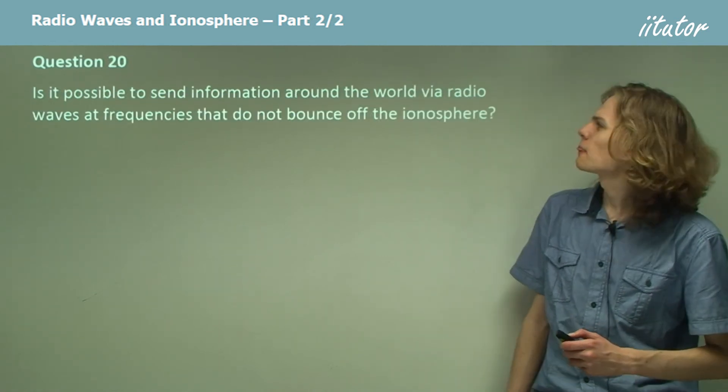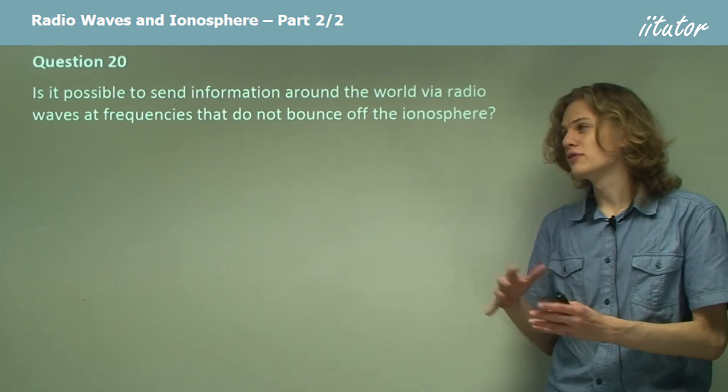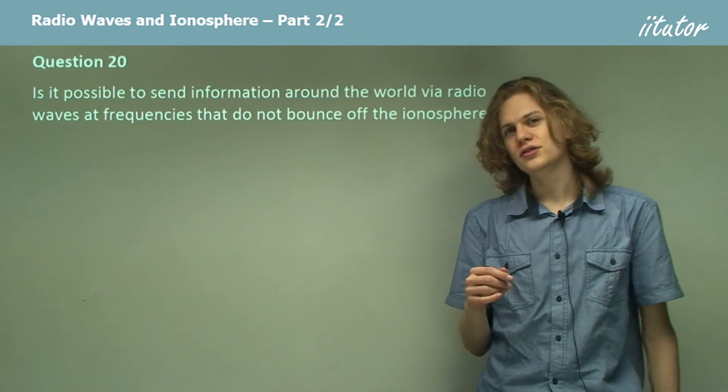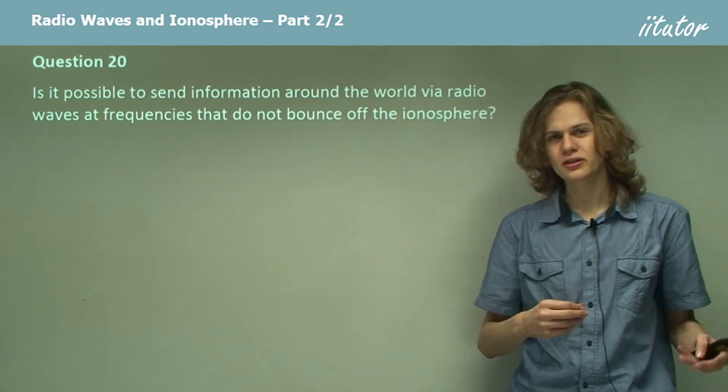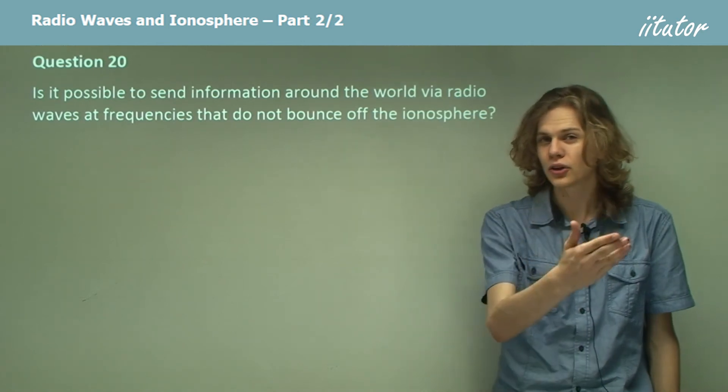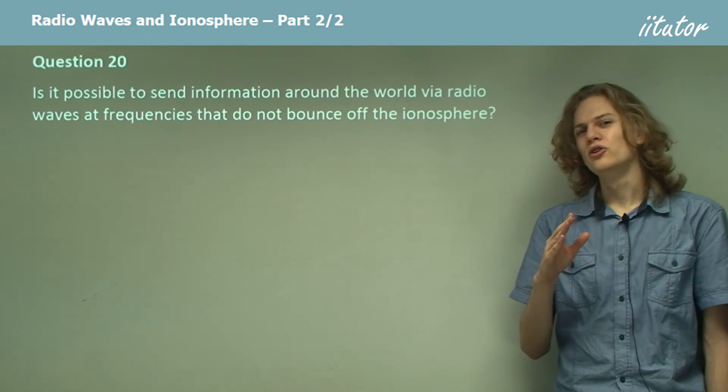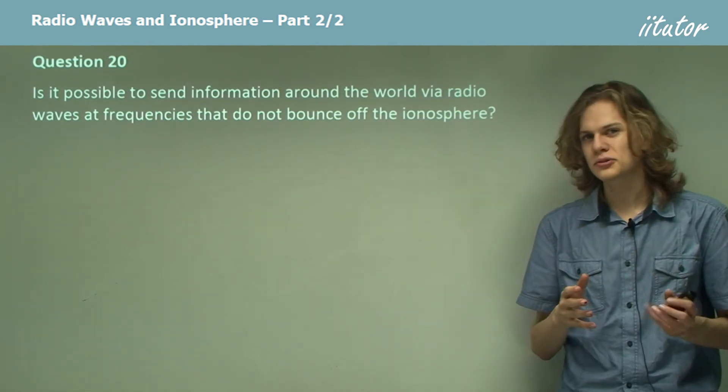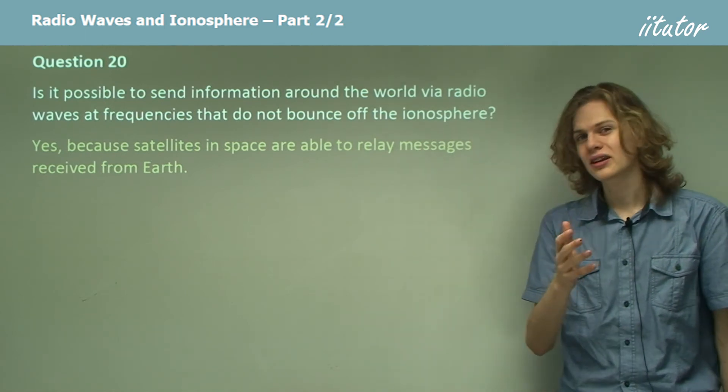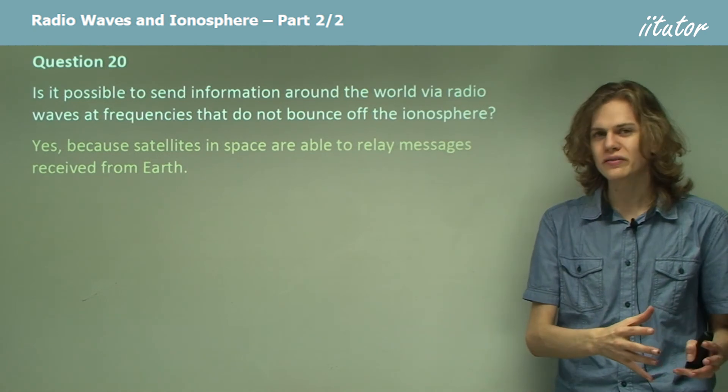Question 20. Is it possible to send information around the world via radio waves at frequencies that don't bounce off the ionosphere? Can we send television or FM radio around the world without line of sight? The answer is yes, but not purely by sending radio waves. We need satellites in space that can receive and retransmit the signal down to a receiving station. This is how satellite TV works.